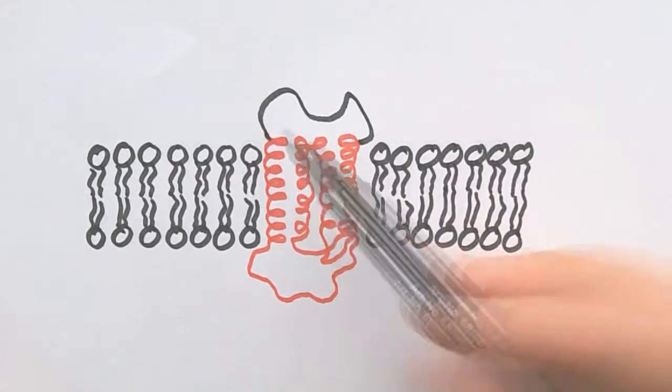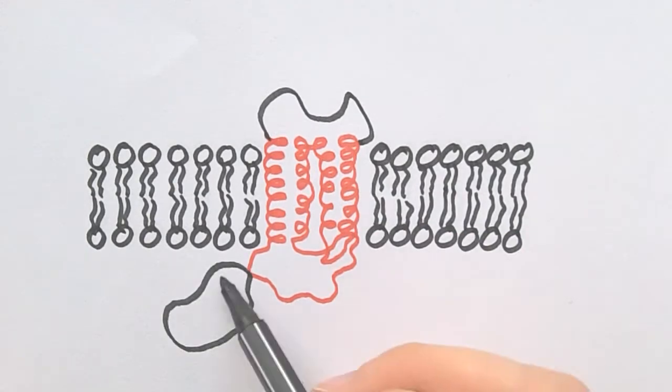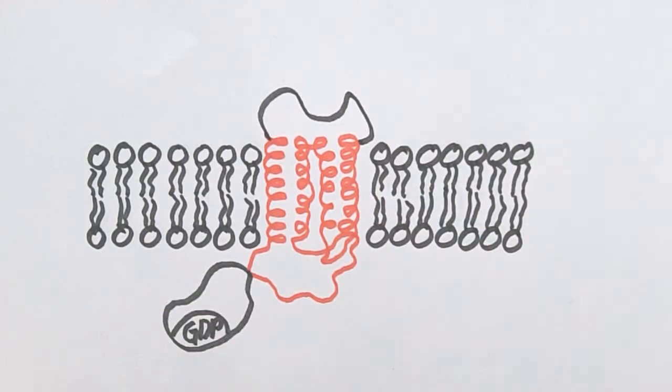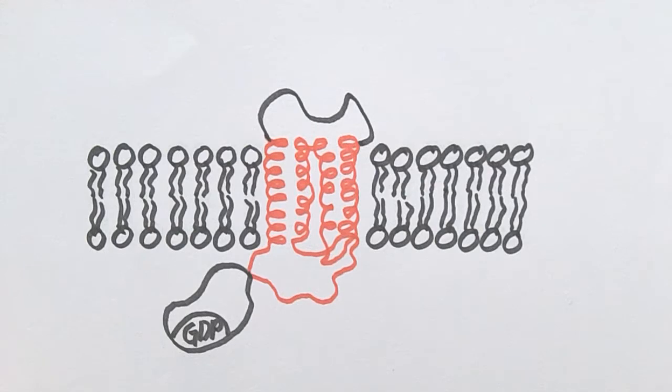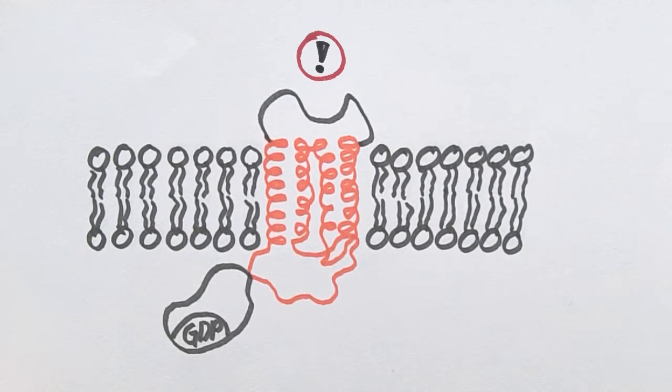GPCRs have a binding site for a specific small molecule like a hormone on the extracellular side. If the right molecule binds to the receptor, a signal is passed through the membrane via a conformational change of the receptor.